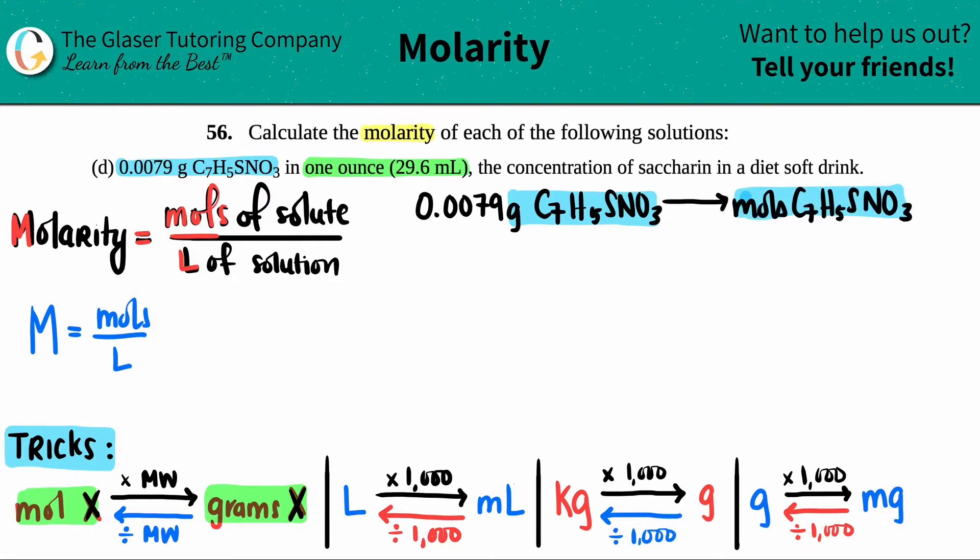We can do this little trick. All we have to do is take the grams and divide by the molecular weight. What is the molecular weight? It's the molar mass, always found on the periodic table. We have to find out what the molecular weight is of this compound.